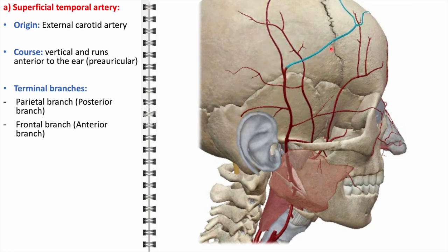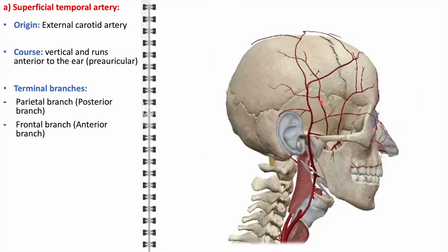The parietal branch courses posteriorly and superiorly, catering to the skin and fascia of the parietal scalp region. The frontal branch travels anteriorly, providing essential blood supply to the skin and muscles of the forehead. This branch is crucial in cosmetic and reconstructive procedures involving the forehead, as well as in treating frontal scalp conditions. The superficial temporal artery's involvement in temporal arteritis, a serious inflammatory condition affecting the arteries, makes it a critical focus in both diagnosis and management of this disease. It's also commonly used for measuring arterial pressure, especially in contexts where other sites are not accessible.